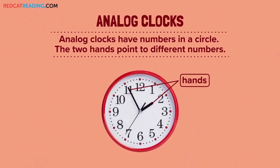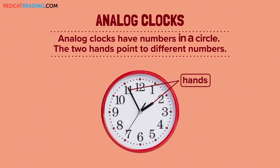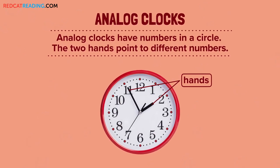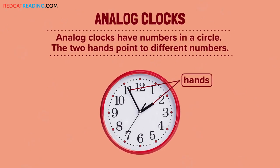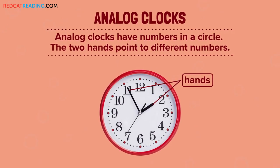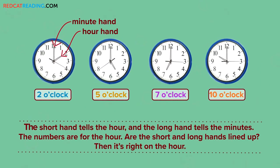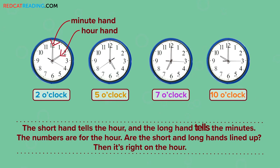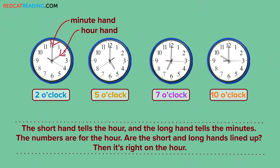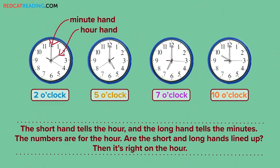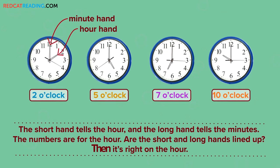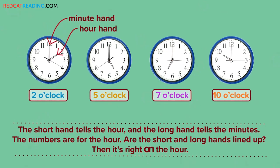Analog clocks. Analog clocks have numbers in a circle. The two hands point to different numbers. The short hand tells the hour, and the long hand tells the minutes. The numbers are for the hour. Are the short and long hands lined up? Then it's right on the hour.